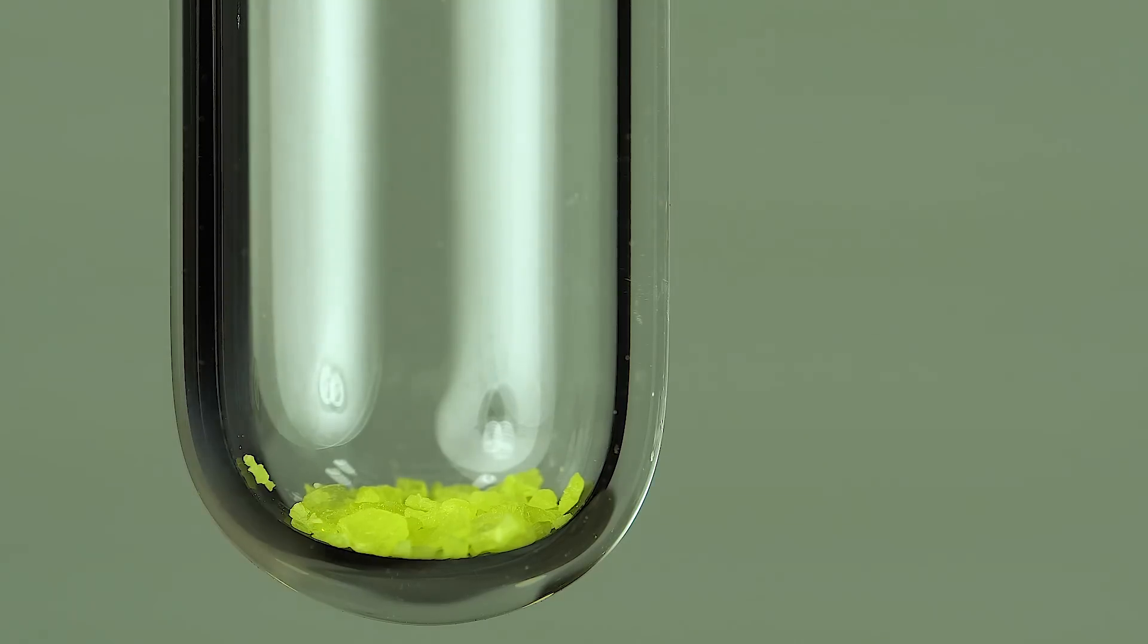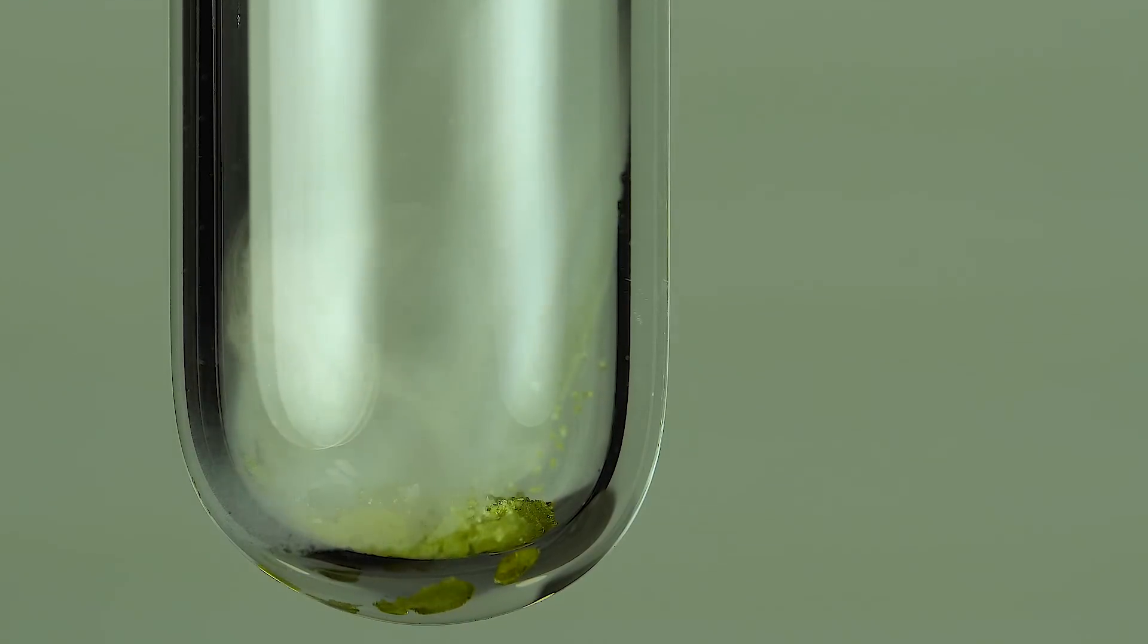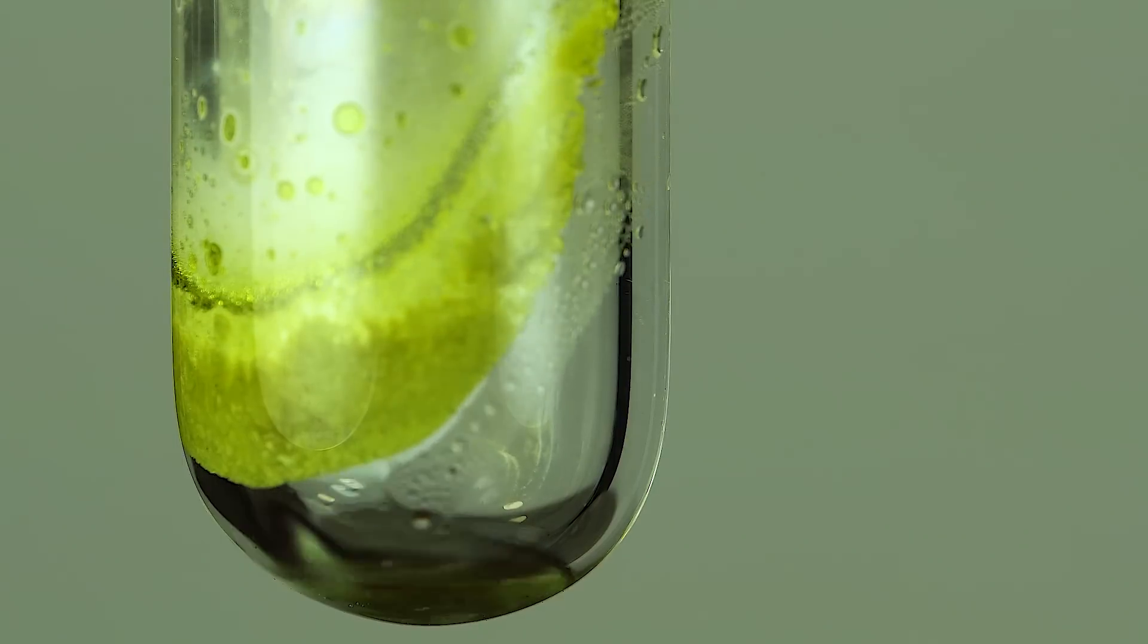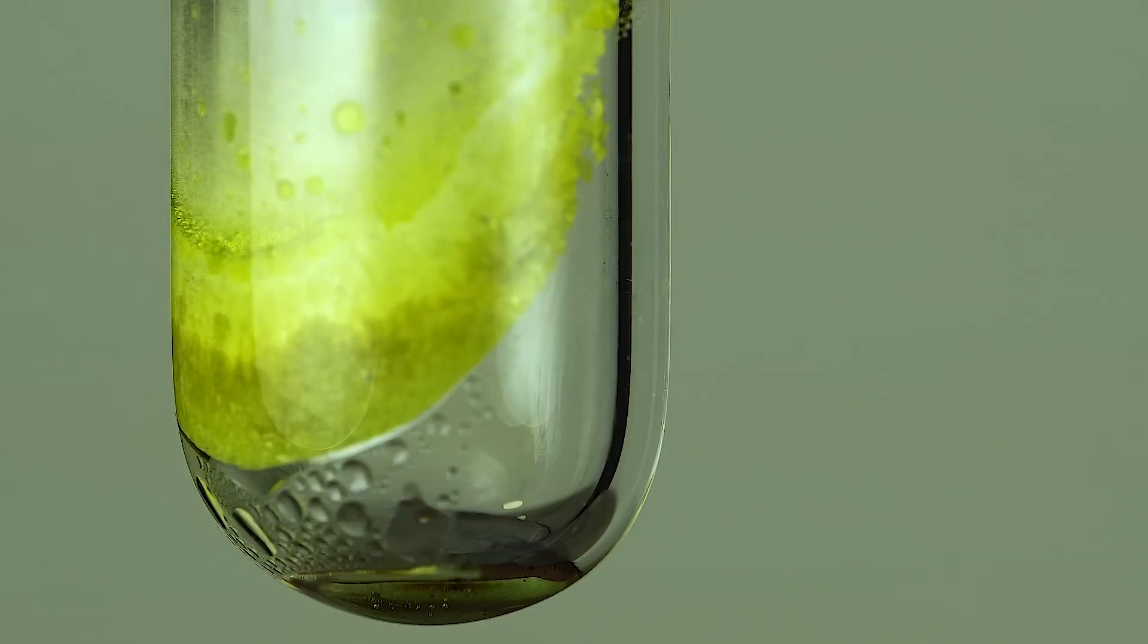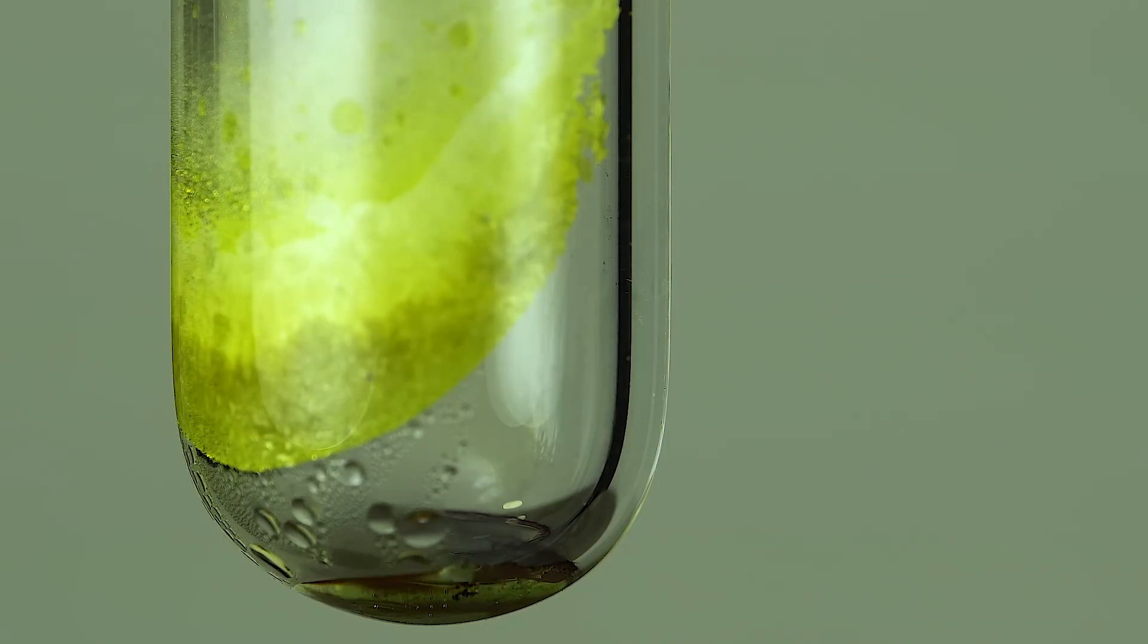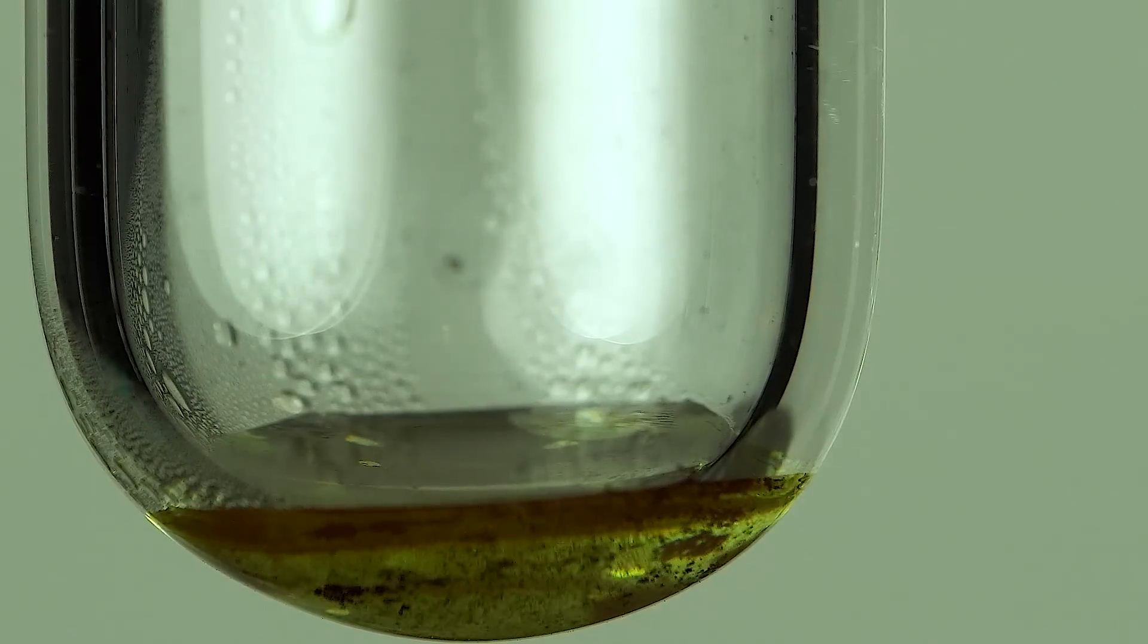Rhenium Heptoxide crystals have the properties that are typical of molecular ones: low stability of the crystal lattice and low melting and boiling points. When heated to 300 degrees Celsius, Rhenium Heptoxide sublimates and settles down on colder tube walls. Look how beautifully Rhenium Heptoxide is crystallizing.